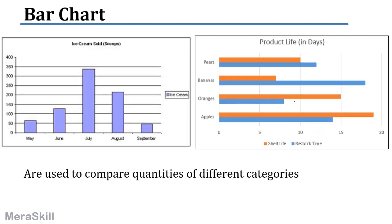A bar chart — for example, ice cream scoops sold: in May around 50+, in June 120, in July nearly 350, and so on across different months. A bar chart can also be used for different products — say bananas, apples, and oranges — where one color represents shelf life and another represents stock. This enables comparative analysis easily.